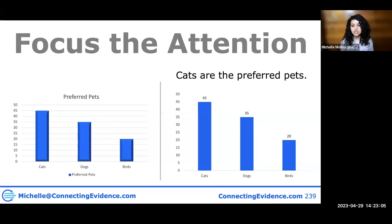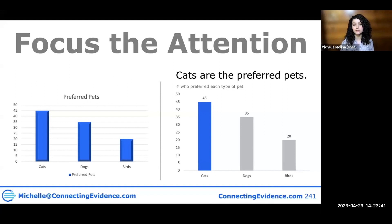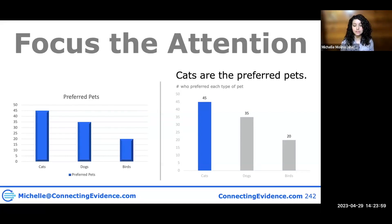Next I'm focusing the attention. I'm going to remove that vague title — 'Preferred Pets' — and drive the point home: 'Cats are the preferred pet.' I'm also adding a short sentence that tells people what these data are actually representing: 'Here is the number of people who preferred each type of pet.' Another thing I'm doing to focus attention is removing the color from the other two bars so that only the cats bar is blue. I'm also graying out the y-axis and x-axis content to further drive home the blue.